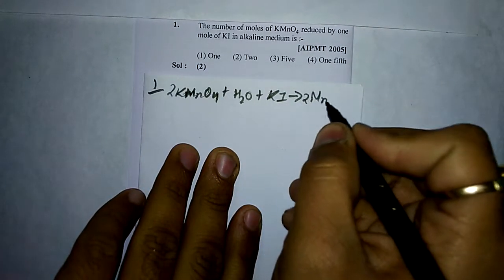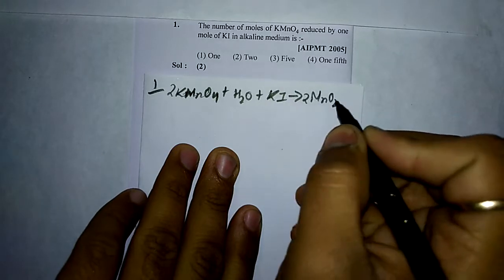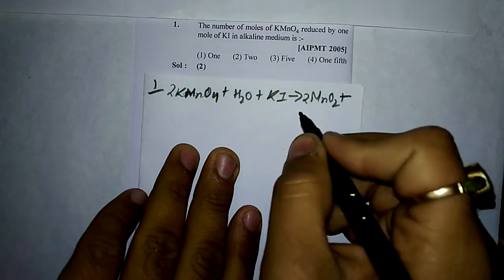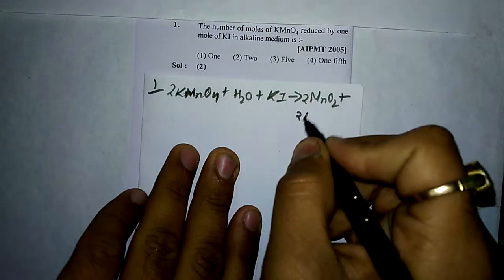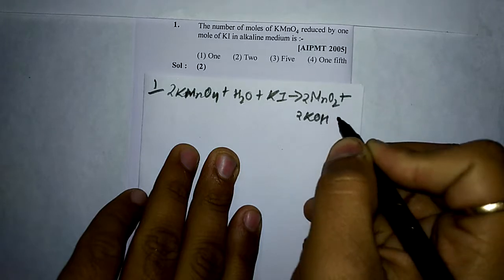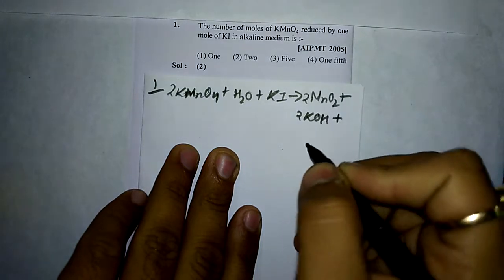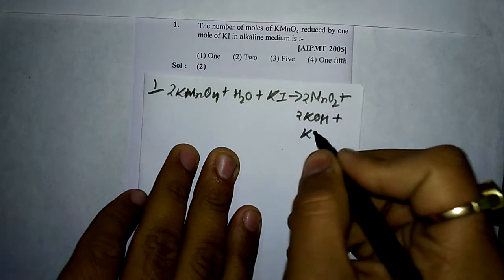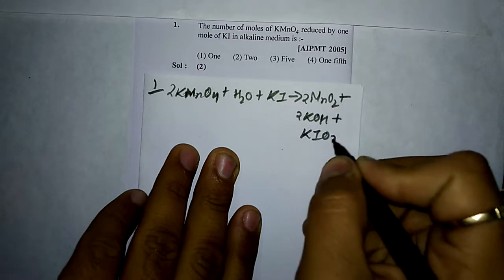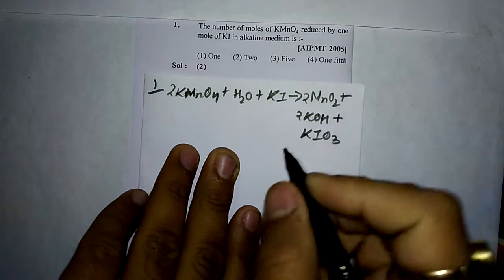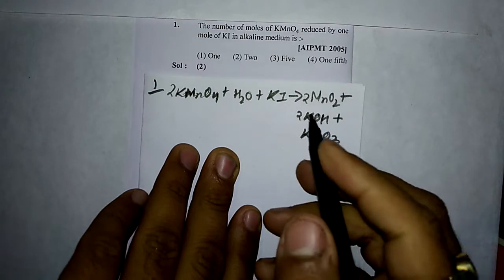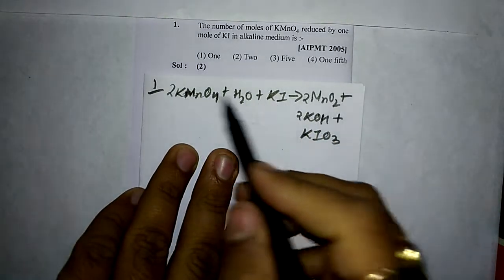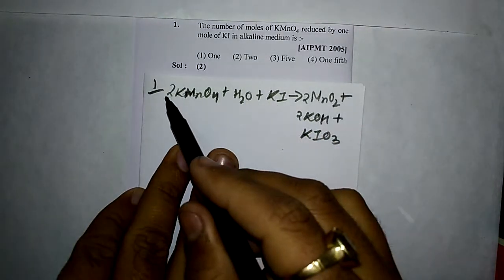gives 2MnO₂ plus 2KOH plus KIO₃ (Potassium iodate). So the number of moles required is...